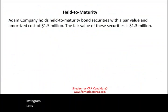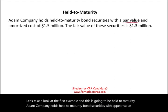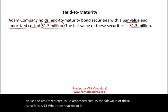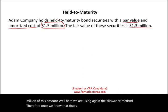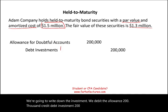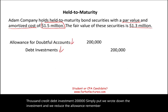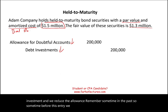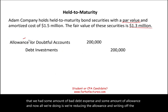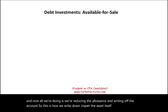The first example is held-to-maturity. Adam Company holds HTM bond securities with a par value and amortized cost of 1.5 million. The fair value of these securities is 1.3 million, meaning we think we can only collect 1.3 million. Using the allowance method, we debit the allowance 200,000 and credit the debt investment 200,000. We wrote down the investment by reducing the allowance. Prior to this entry, bad debt expense and the allowance had already been recorded.